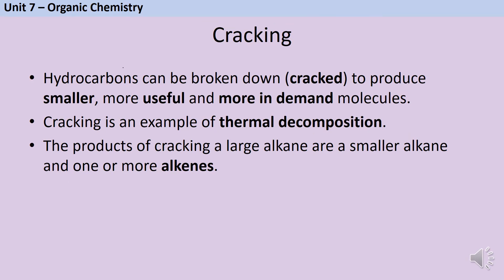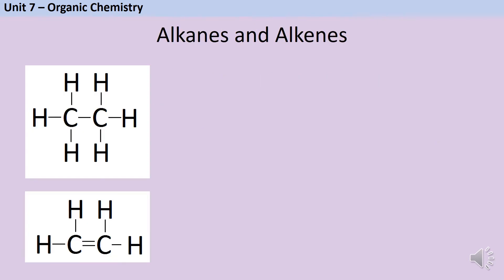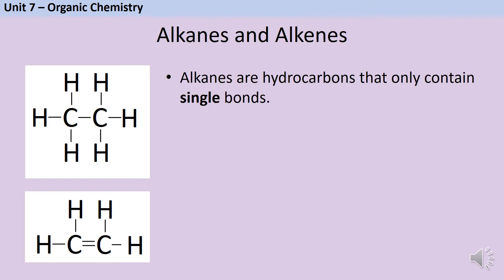Instead the products of cracking are one alkane and one or more alkenes. Alkenes are another example of a homologous series — a group of compounds that undergo similar chemical reactions because they have a shared functional group and a shared general formula. You've already met the alkanes, which are hydrocarbons that only contain single bonds. Another way of describing this is to say that they are saturated.